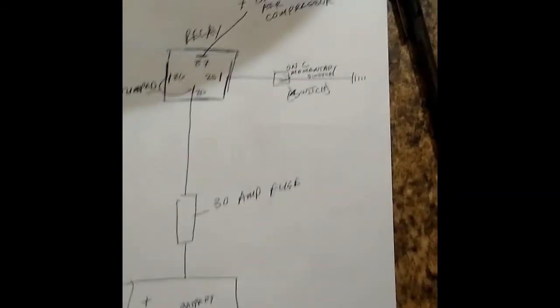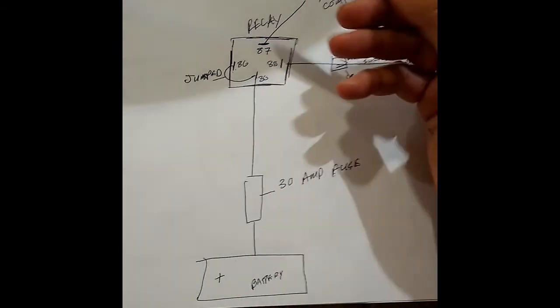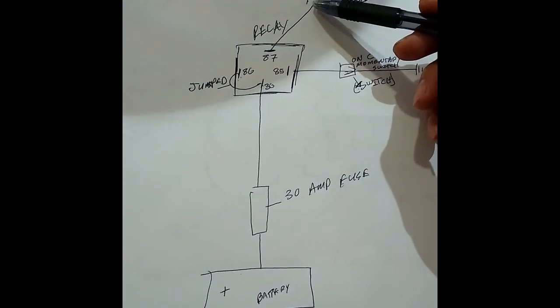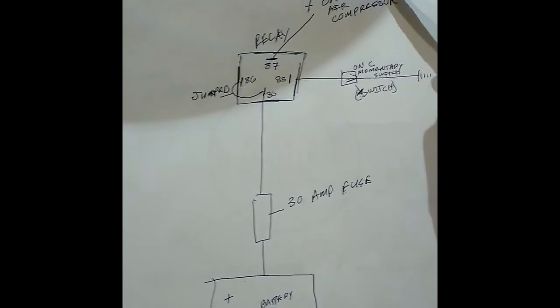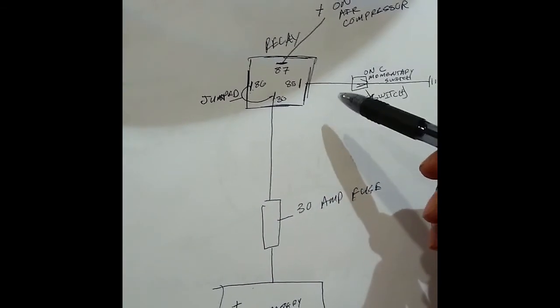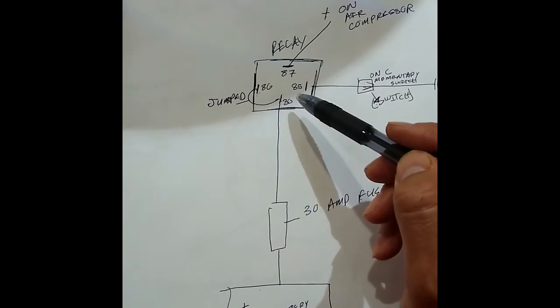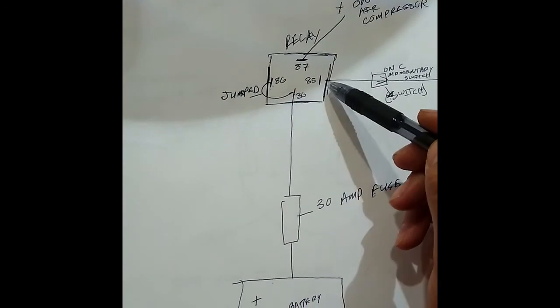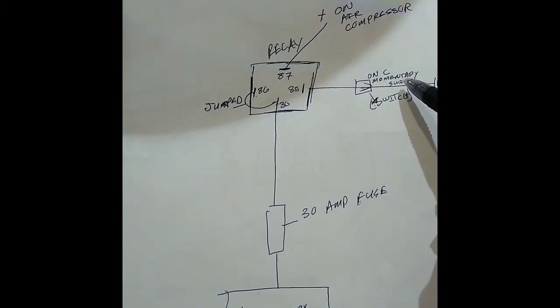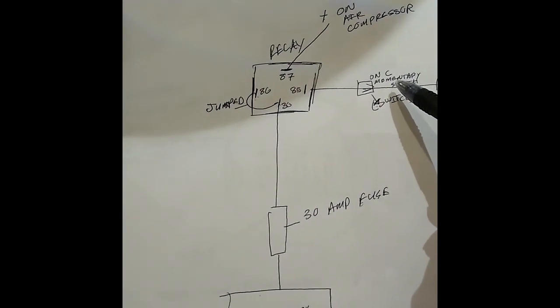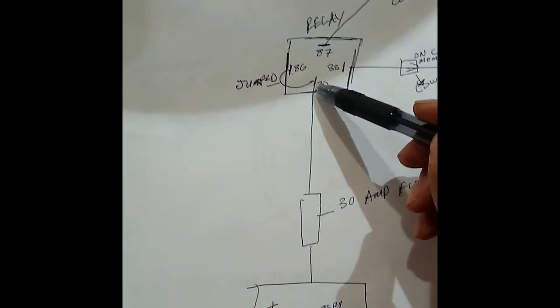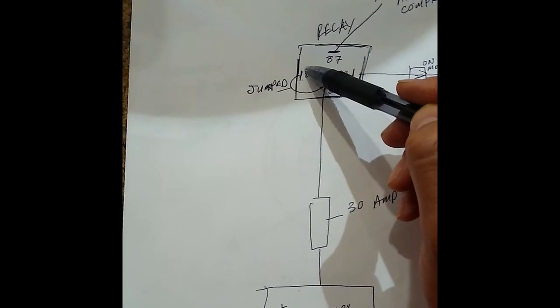This is going to be the relay. So you got your relay. 87 is going to be the power source for your air compressor. So you want to put that on the plus side of your air compressor. Of course, your air compressor is going to also have to be grounded into the frame. 85, that's going to be the relay's ground. That's going to go into the C portion of the momentary switch. I'll get that to the C portion on the next page.